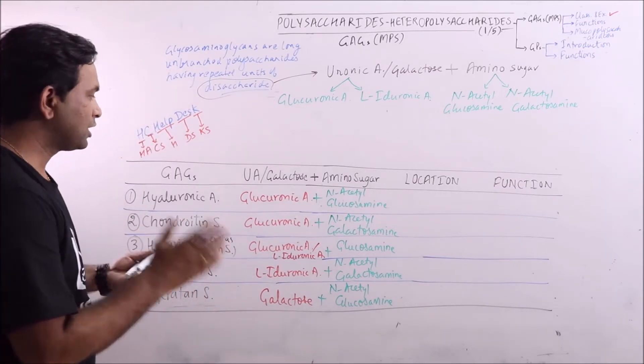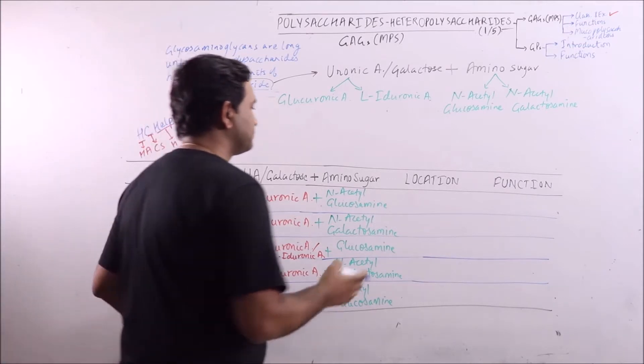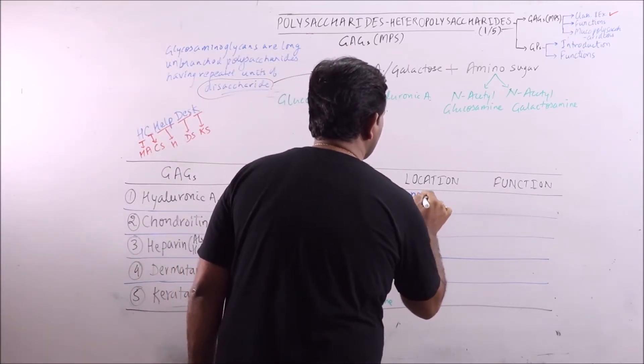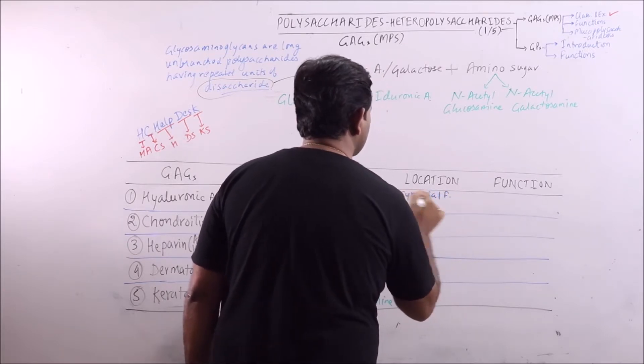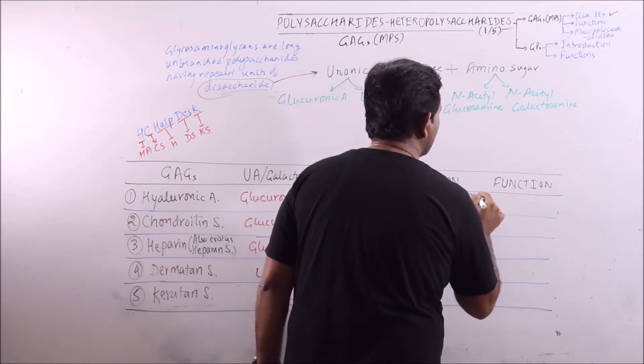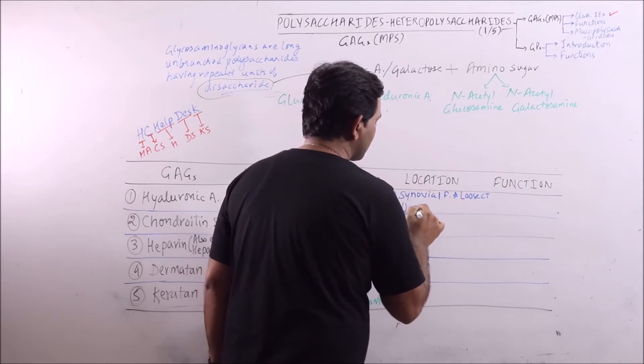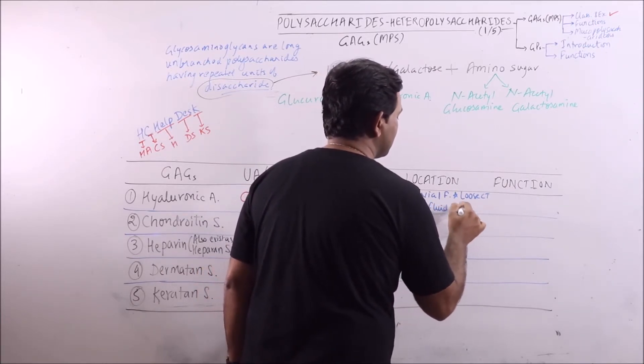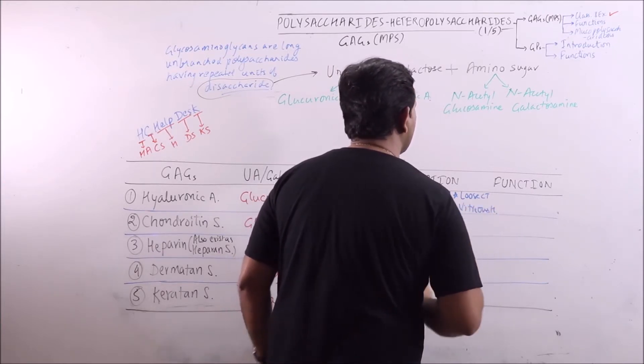Now what are the locations of hyaluronic acid and the functions? Synovial fluid, loose connective tissue, umbilical cord, and vitreous humor.